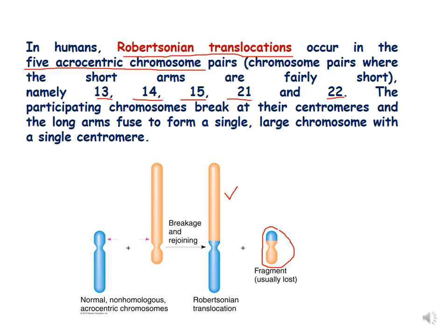As we have also seen in the previous part 2 lecture of translocation, in humans Robertsonian translocation occurs in five acrocentric chromosomes. These chromosomes are 13, 14, 15, 21, and 22. The participating chromosomes break at their centromere and result in the formation of a very long chromosome and a small chromosome.